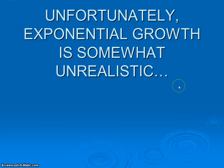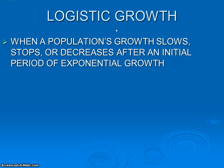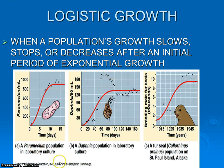Exponential growth isn't really that realistic — it's usually only temporary and occurs under ideal conditions, like an area with unlimited resources where there are no caps on food, water, or space, and usually when you have a low initial population. You have a few founding individuals to start the population off, and with unlimited resources, reproduction goes unchecked. Much more realistic, and much more common in nature, is something called logistic growth.